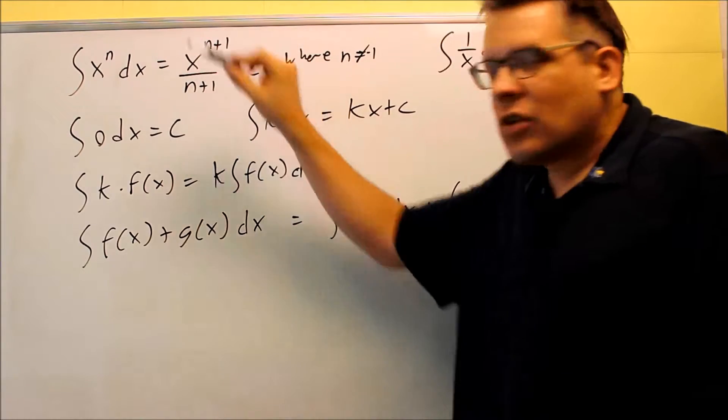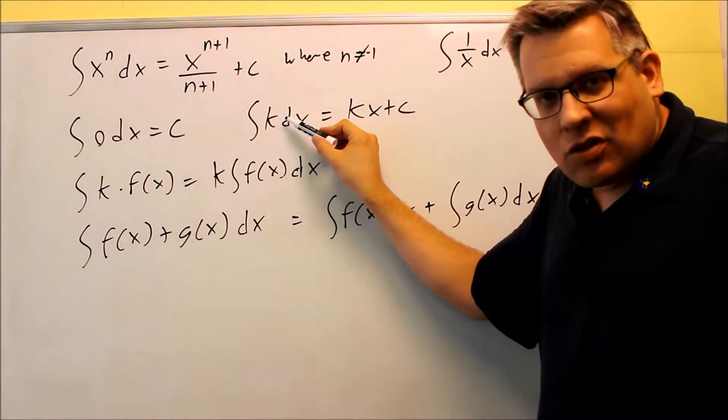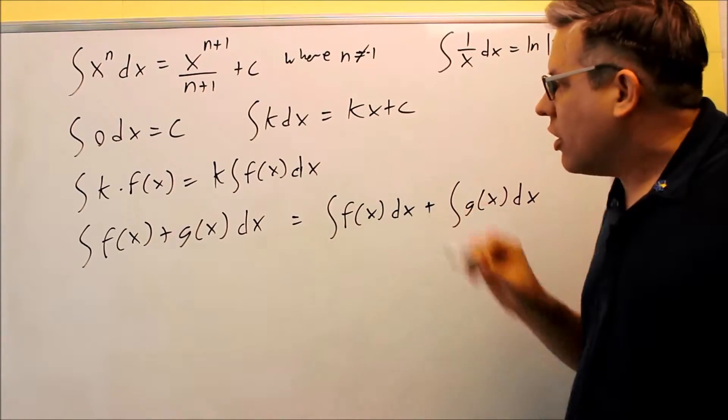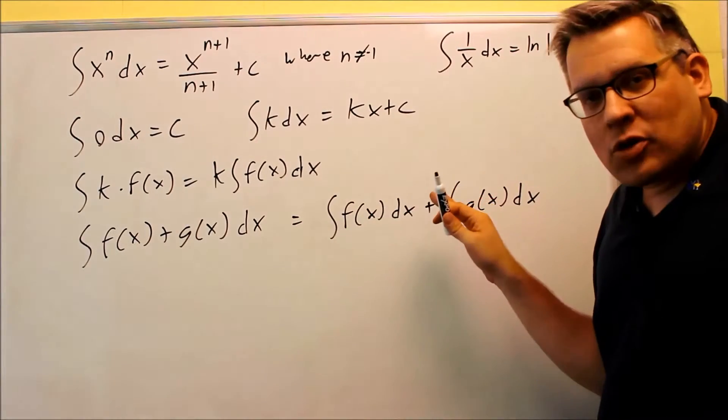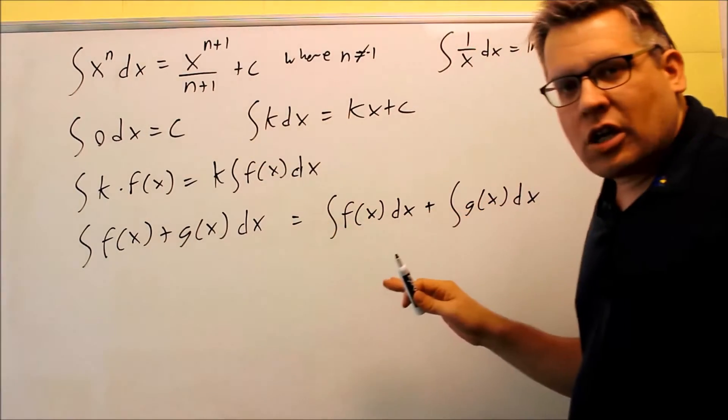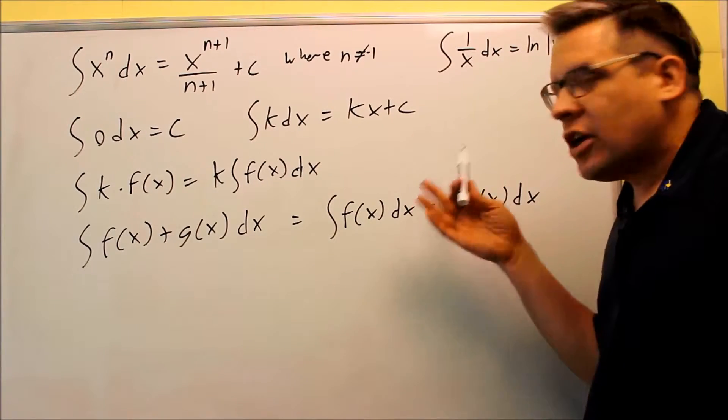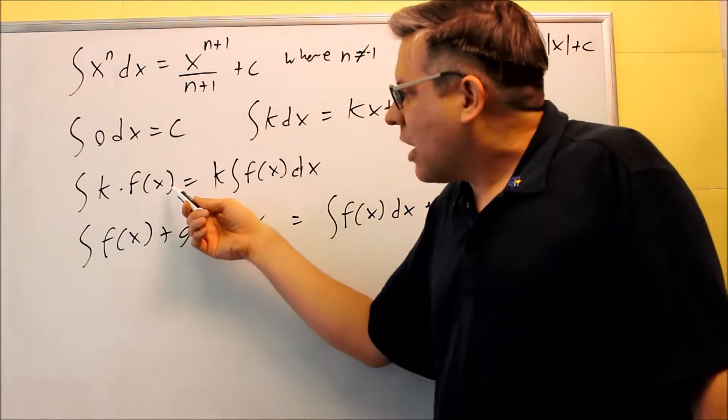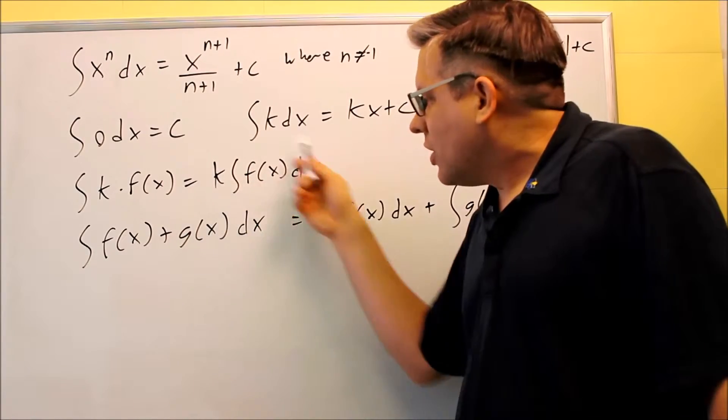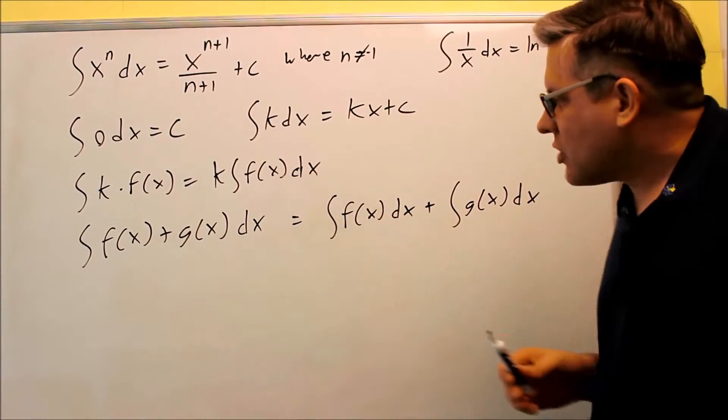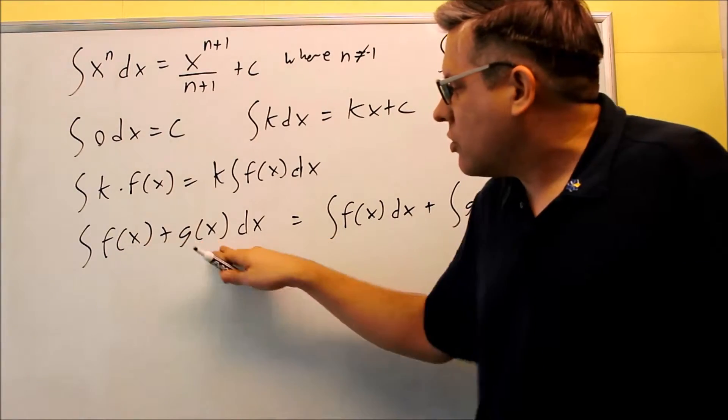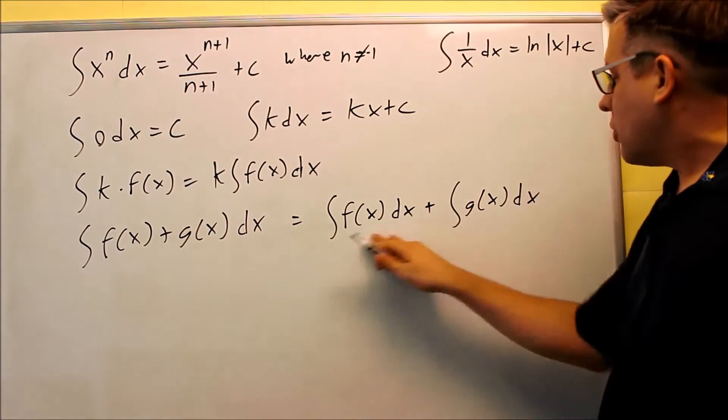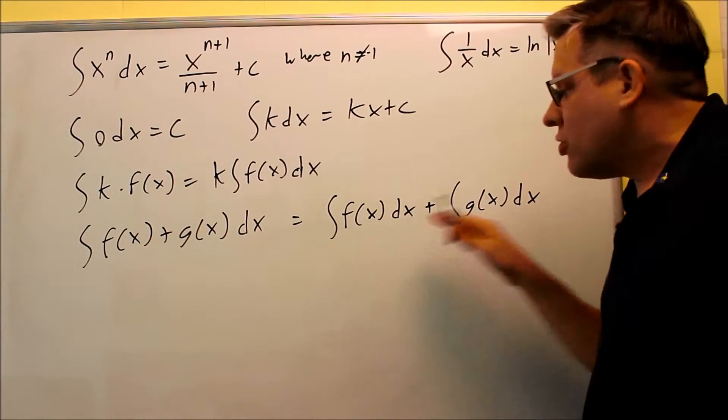Technically how that works is it's a variation of this formula right here. This is technically x to the zero power. Raise the power by one, divide by new power, you'll get x to the one over one, which is why you get an x there for that one. And here's a couple other properties working with integrals. We're going to talk about these and kind of prove these more later when we get into more of the theory about this, but right now I just want to give these to you. If you have k times f(x), you can move the constant out front and then do the anti-derivative with whatever you have left inside there. And also if you have two separate f and g functions, instead of doing the whole thing combined, you could split these up and do that separately and do two different integrals.